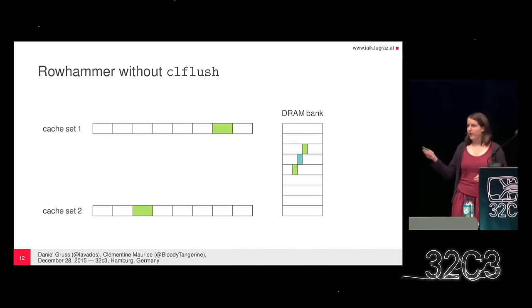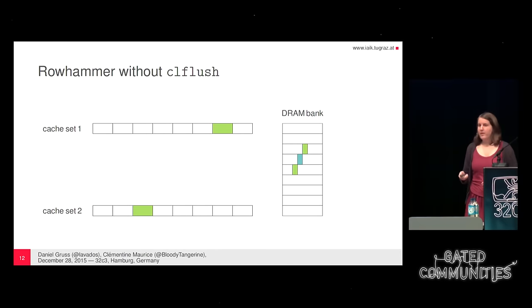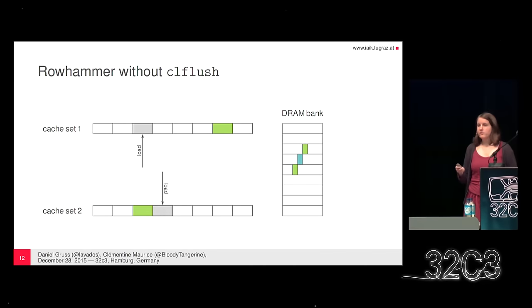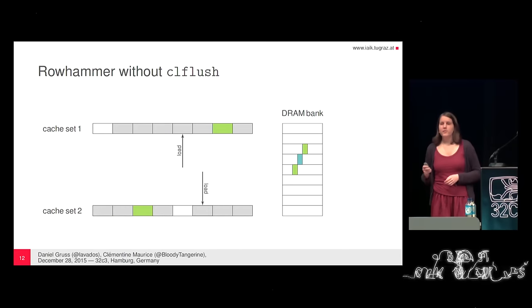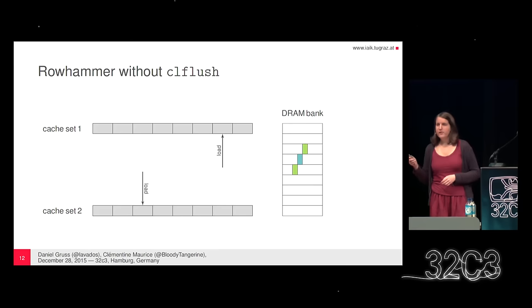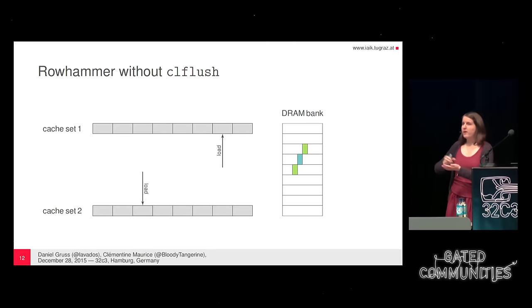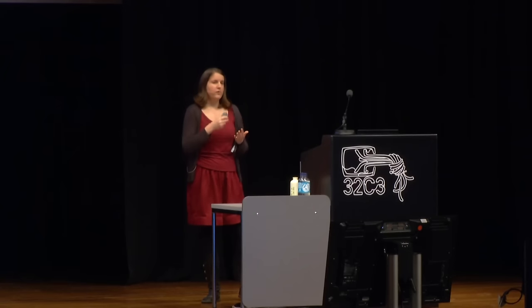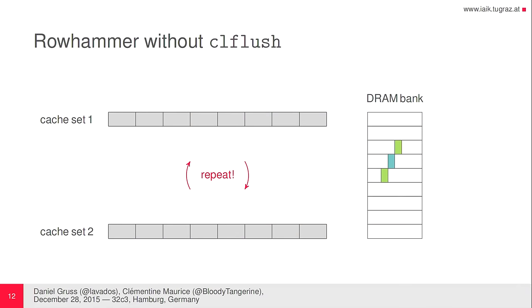It works similarly: we still have a cache line we want to evict, and we access many addresses that map to the same cache set until we eventually evict the line we want. Something important here is that while we can choose which cache set the accesses go to, we cannot choose where within the cache set they land — that depends on the replacement policy. We wait until we have evicted our lines, then the next access will be served from DRAM, which is exactly what we wanted. We repeat this until we have our bit flip without CLflush.